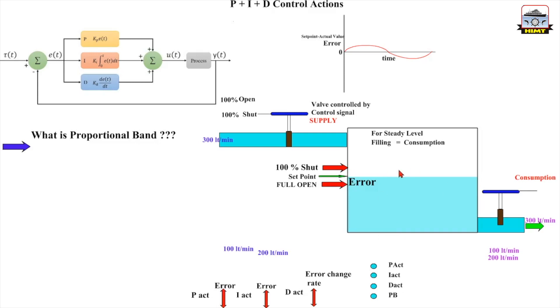Now this is what people roughly refer to as proportional band. It in fact tells you about the sensitivity of the corrective action with respect to the error.